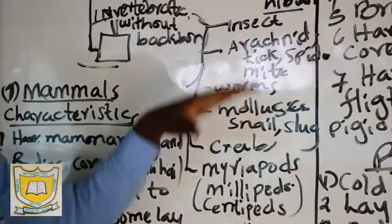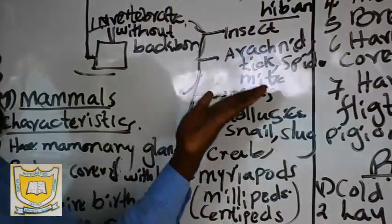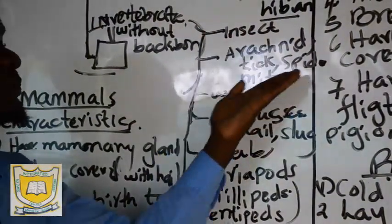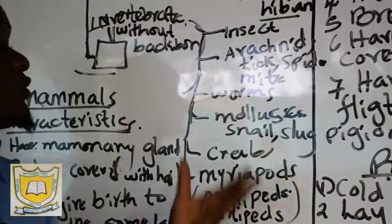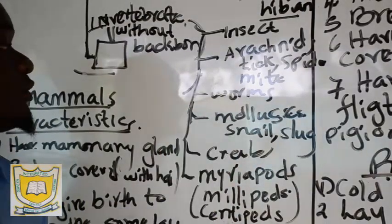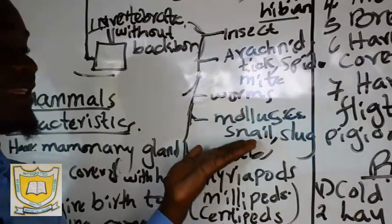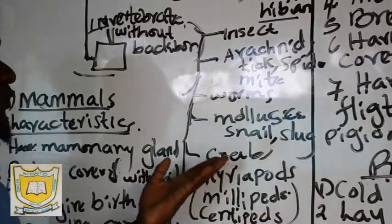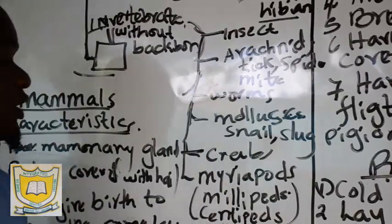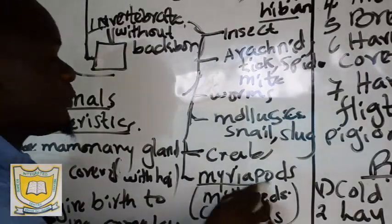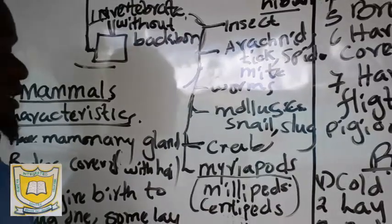Examples of insects include butterfly. For arachnids, we have ticks, spiders, and mites. Examples of worms include earthworms. For mollusks, we have snails and slugs. Examples of grubs include just the grub. And for myriapods, examples are millipedes and centipedes.